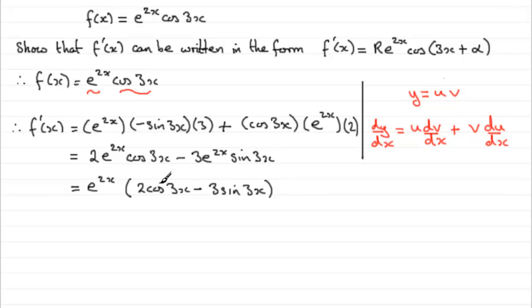We expressed this in the form r cos 3x plus alpha. So this is going to be the same then as writing this as r times e to the 2x cos 3x plus alpha from the first part. Now it's up to you whether you decide to put in the r value and the alpha value, but I'm just going to leave it like that with my r and alpha as what I had in the first part. And there you have it.